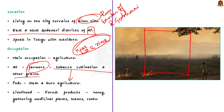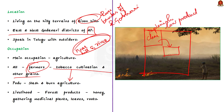Slash and burn agriculture is a technique in which farmers clear a patch of land and produce cereals and other food crops to sustain their family. Whenever soil fertility decreases, the farmer shifts and clears a fresh patch of land for cultivation. This type of shifting allows nature to replenish the soil's fertility through natural processes. Land productivity is low as the farmer does not use fertilizers or other modern inputs. The Kondareti people call this practice Pudu, and at present the population is only in the hundreds, with livelihood dependent on forest products like honey, medicinal plants, leaves, and roots.